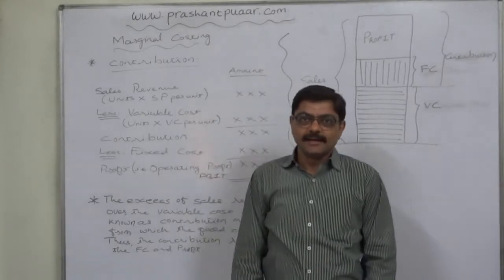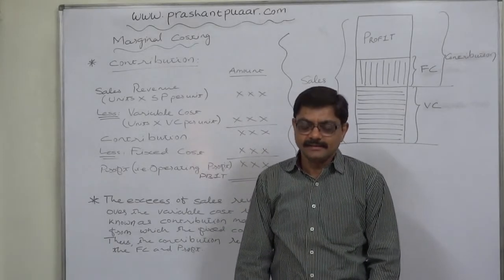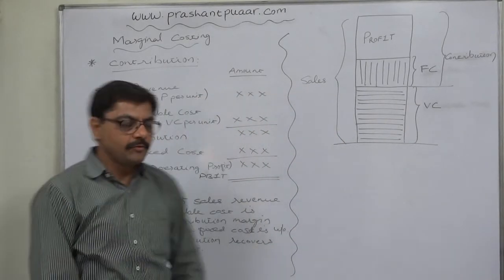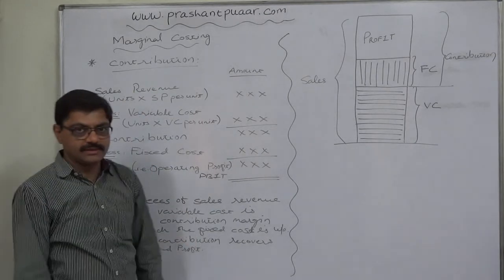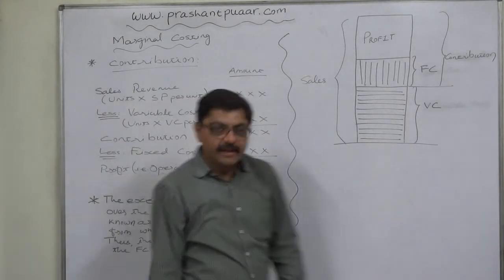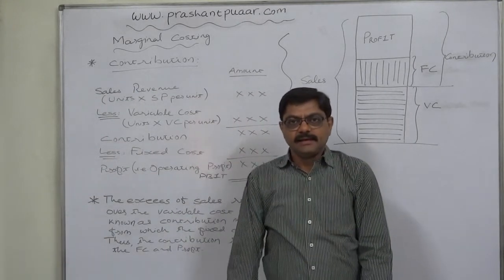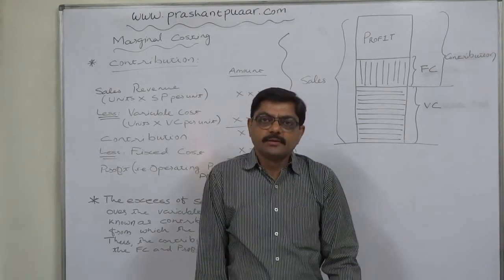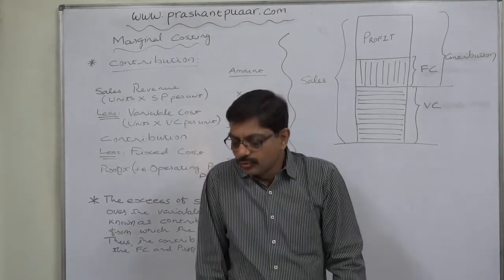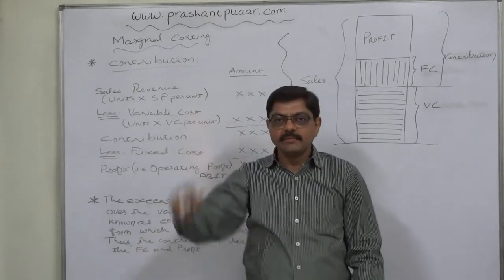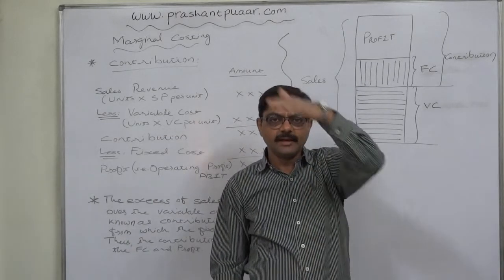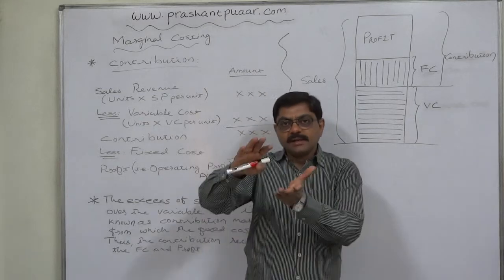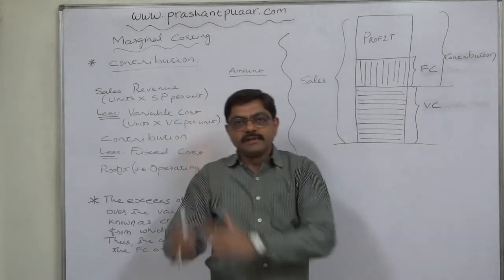Welcome friends, namaskar. Let us discuss a very important point popularly known as contribution or contribution margin. In marginal costing technique, first we have to segregate the total cost into two parts: one is known as variable cost and the remaining part is fixed cost. Variable costs are generally the costs which are directly relevant to the production activity, and mostly fixed costs are based on time.